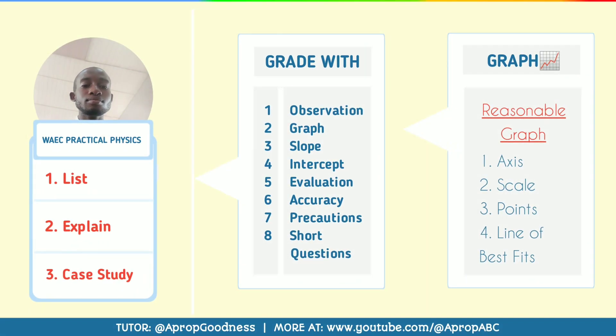The next one is graph. In graph, they mark four things: A, S, P, L — Axis, Scale, Point, and Line of best fit.